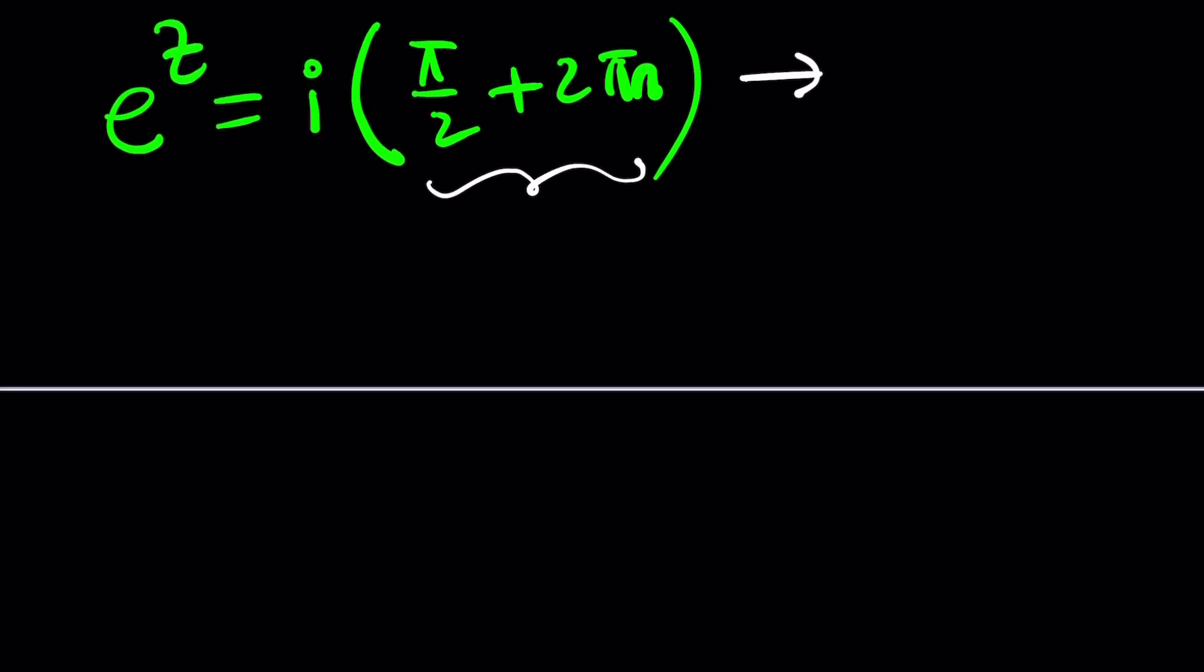So here's what I'm going to do. I'm going to, for the sake of simplicity, assume that n is equal to 0. And as a bonus, I can also look at the case n equals 1, which is not going to be very different, by the way. But if n is equal to 0, e to the z becomes i times π over 2, which is super duper simple.